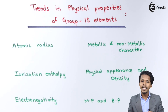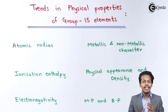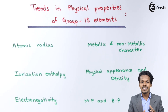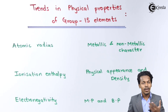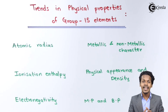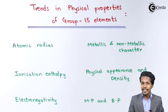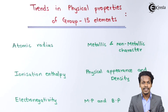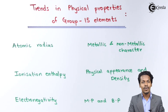Another property is conductivity. Nitrogen, being a non-metal, has very low conductivity and can be considered a non-conductor. Bismuth, having metallic character, is a good conductor of both heat and electricity. Antimony is also a good conductor of heat and electricity. These are the physical traits of group 15 elements.